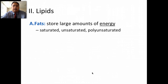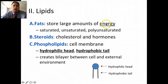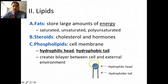The second macromolecule we talked about was lipids. A lot of you associated lipids with fatty, oily stuff — which is true. But there are three types of lipids: fats, which store a whole bunch of energy; we drew a picture of saturated, unsaturated, and polyunsaturated fats. We also talked about steroids such as cholesterol and other hormones. The third lipid type is phospholipids — it has a hydrophilic head and a hydrophobic tail, and it forms a bilayer that makes up our cell membrane. That's why lipids are very important.